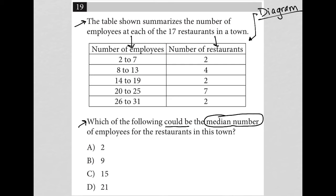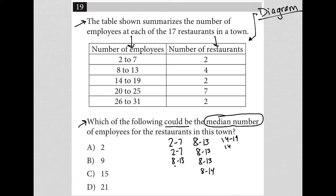So I'm probably going to need to do this a little differently than I usually do median number questions. Let's look at this in terms of range. I'm going to say I have between 2 to 7 for two of my restaurants, 8 to 13 for four of my restaurants, 14 to 19 for two restaurants — just trying to get this in ascending order and separated out — and then 7 restaurants with 20 to 25, and 26 to 31 for two restaurants.